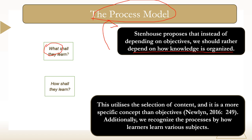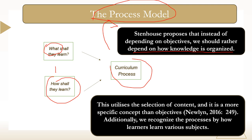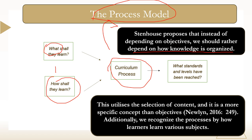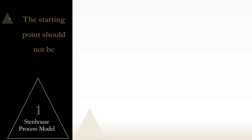We ask ourselves two generalist questions with the process model. First: what shall they learn — the knowledge, concept, or topic. Second: how shall they learn it, not what should have been learned at the end of the lesson. These two questions form the curriculum process, leading us to assess what standards and levels have been reached.